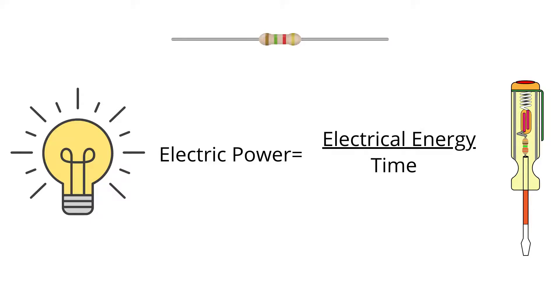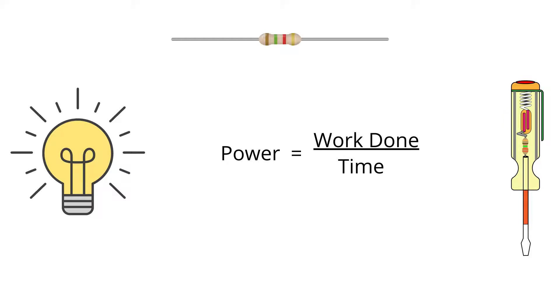Now let us derive the unit of power by using this basic formula: power equals work done divided by time taken. The SI unit for work is joules and the SI unit for time is seconds. Putting them in this equation, we get power equals joule divided by second. Joules per second gives us the unit of power, which is called watt, with capital W as its symbol.